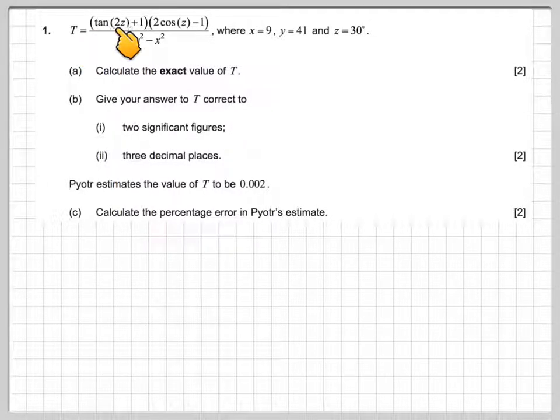T is equal to tan 2z plus 1 times 2 cos z minus 1, all over y squared minus x squared, where x is 9, y is 41, and z is 30 degrees. So we've got to put this into our calculator.